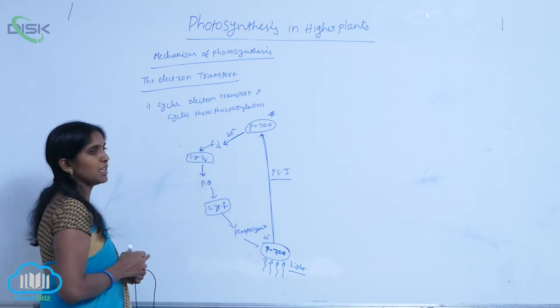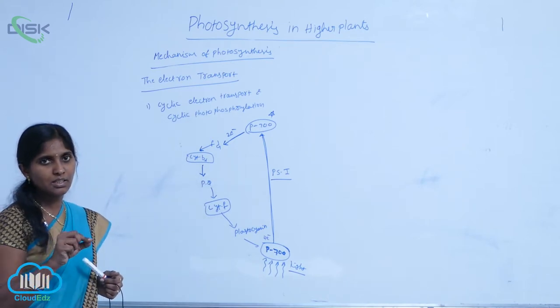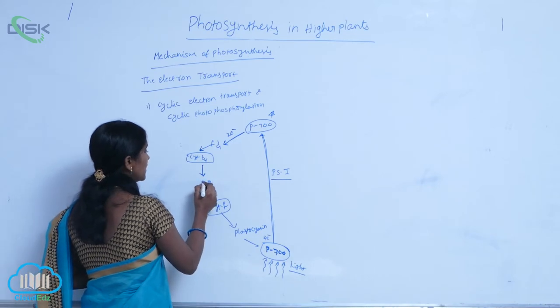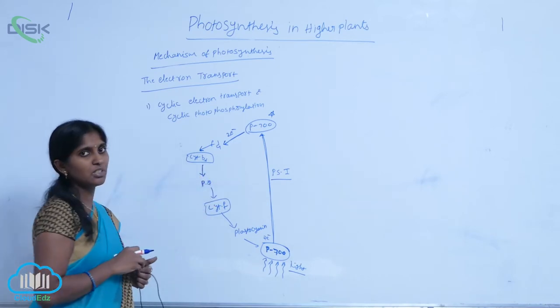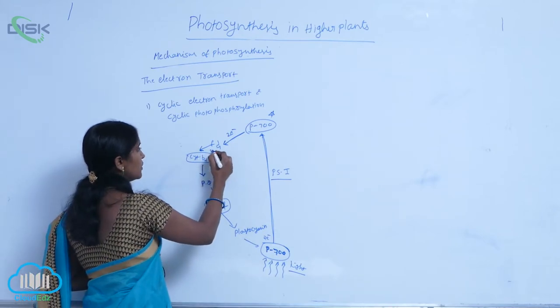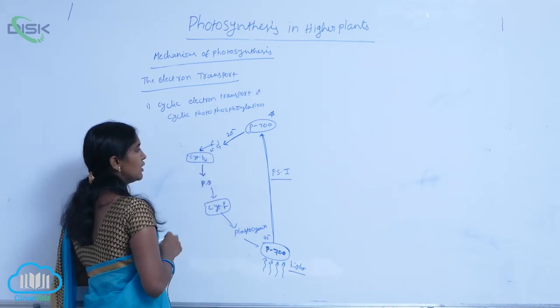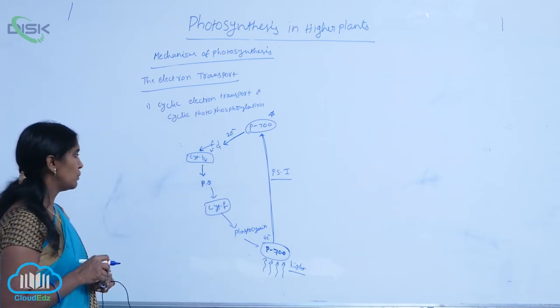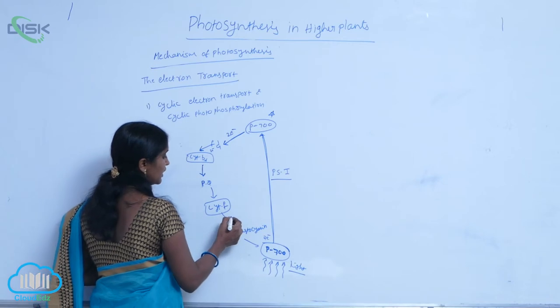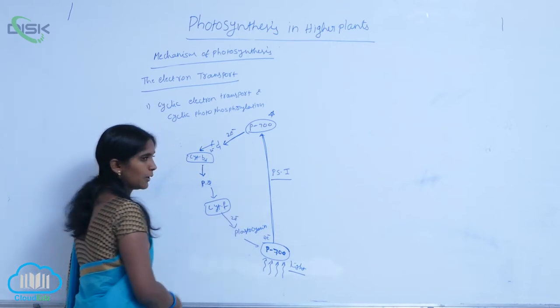The electrons then move to cytochrome F. Between cytochrome B6 and F, the plastoquinone cycle occurs, involving reduction and oxidation reactions. The electrons pass from ferredoxin to cytochrome B6, to cytochrome F, and finally reach plastocyanin.